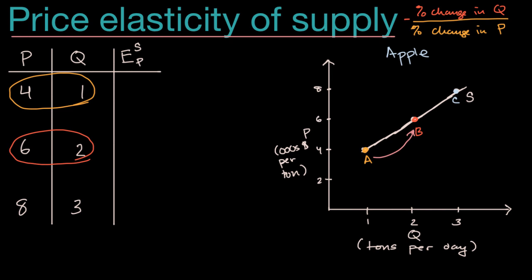So first of all, what is going to be our percent change in price? Well we're going from four to six, so it's an increase of two. So our percent change in price is going to be equal to two is how much we increase from a base of four times 100%. And that of course is going to be equal to a 50% increase in price.